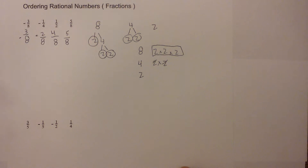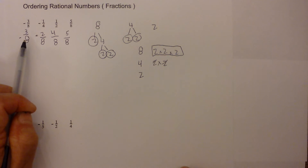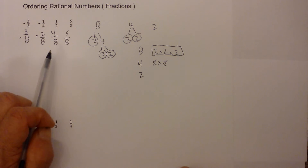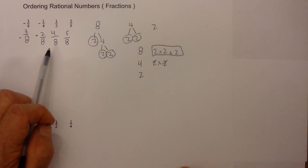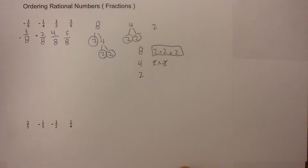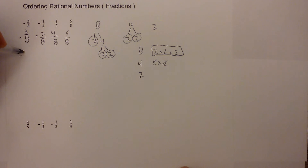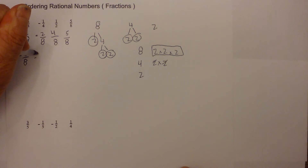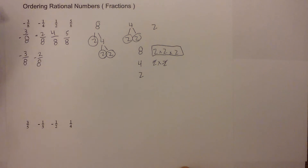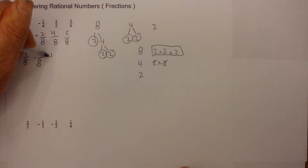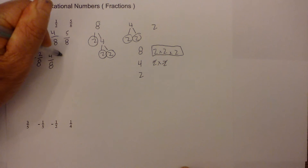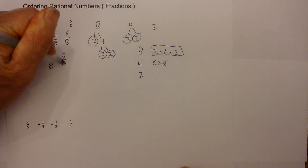Now we have something we can compare because they all have a common denominator. I'm going to order them from least to greatest. Remember: with negative numbers, the larger the number the smaller it is. So negative three eighths will be first, then negative two eighths, then four eighths is smaller than five eighths, and five eighths would be the greatest.